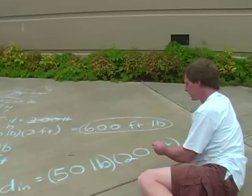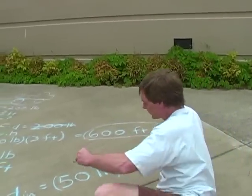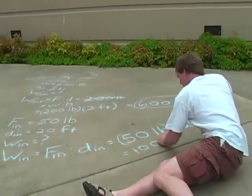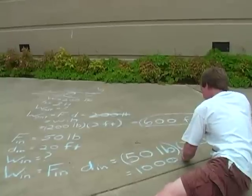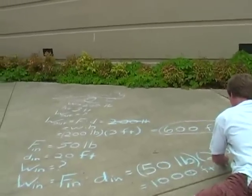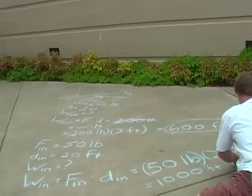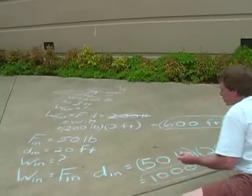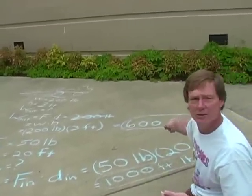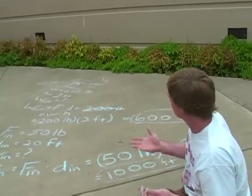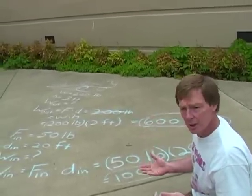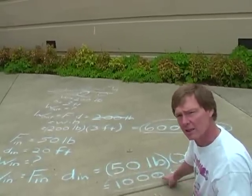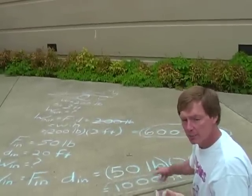That's going to give me 50 times 20. That's 1,000 foot pounds. So what I've done is I put 600 foot pounds of work into that object. But the input work that I did to get it up there was 1,000 foot pounds. It took more work in to get that work out. But I required less force.